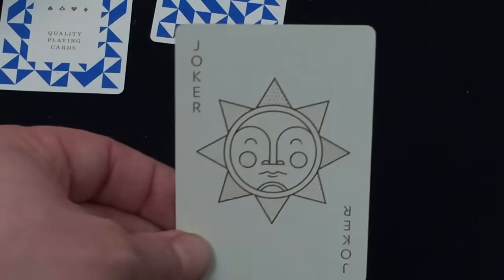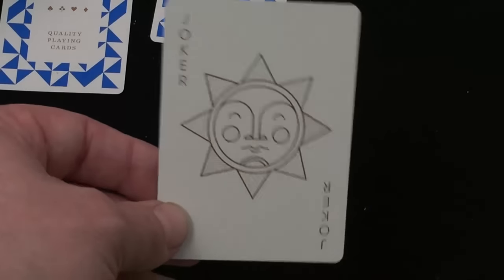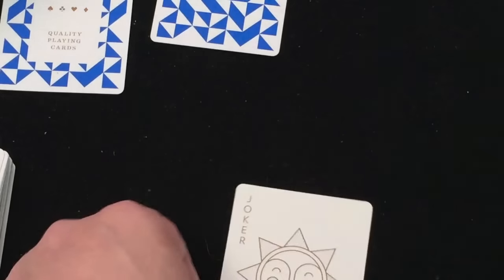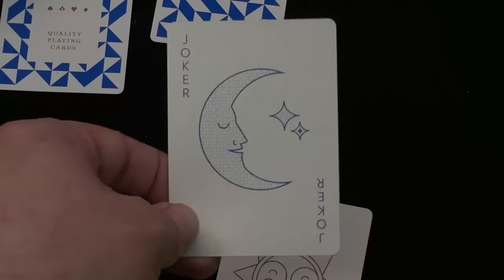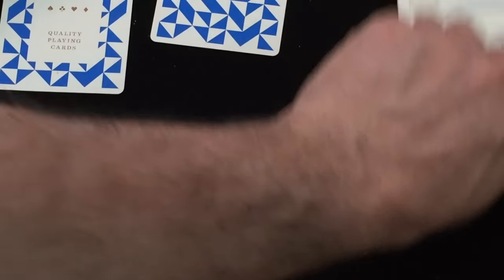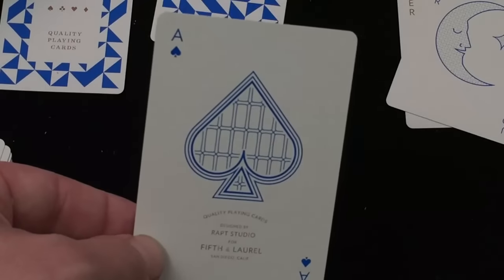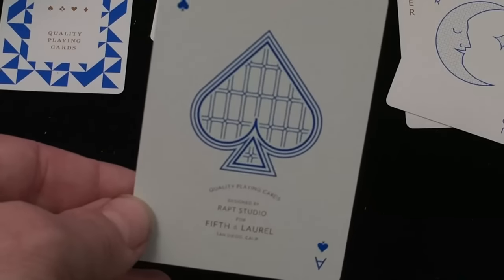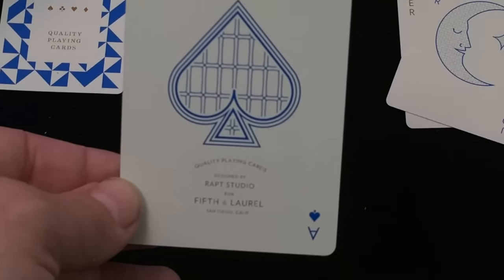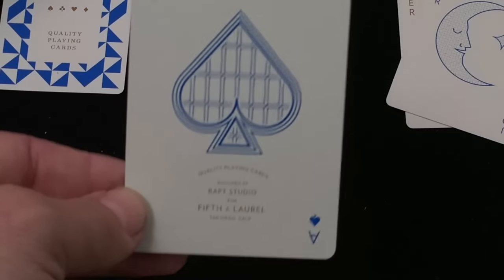The joker is pretty simple, gold foil and green corners. That's the sun, looks like it's asleep. And the other one is blue, it's the moon. Ace of spades, very nice retro style artwork. It says quality playing cards, designed by Wrapped Studio for Fifth and Laurel, San Diego, California.